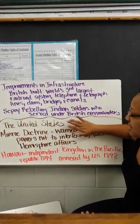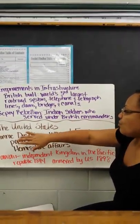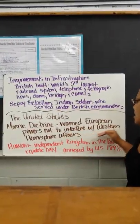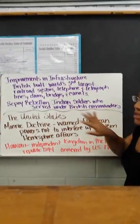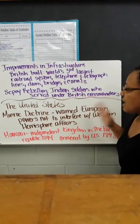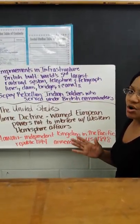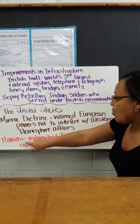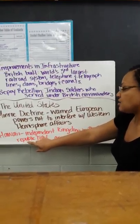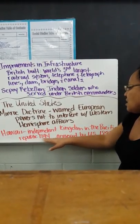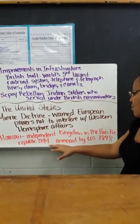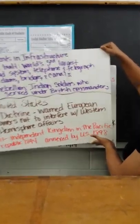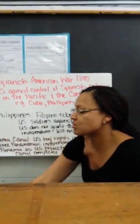Moving on to the United States. President Monroe warned the European powers not to interfere with Western Hemisphere affairs — that's why it's called the Monroe Doctrine. He warned them to stay in the Eastern Hemisphere while the United States focused on the Western Hemisphere, and not to come and try to colonize these areas. Looking at what countries we added: we added Hawaii. Hawaii did not want to join the United States — we basically forced them. They were an independent kingdom in the Pacific in 1894, but by 1898 we made them part of the United States because of their sugar plantations and sugar resources.